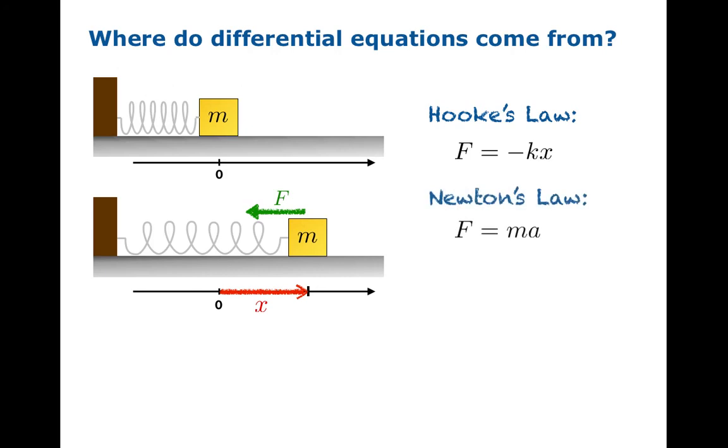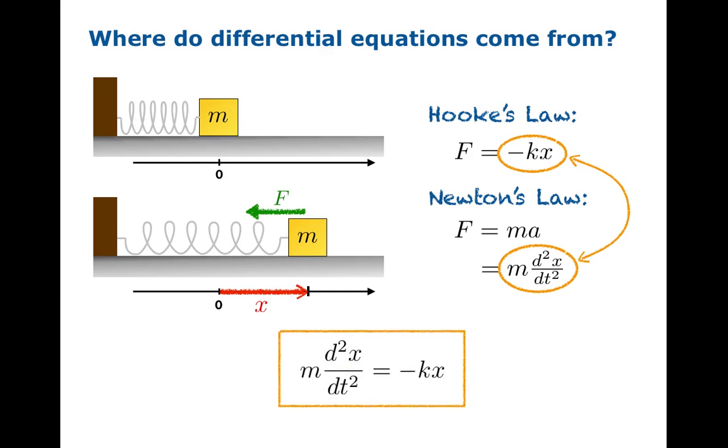Newton's law tells you that another way to write the force is mass times acceleration, but acceleration is just the second derivative of position with respect to time. So you have these two ways of writing out the force, and if you equate them, you obtain a second-order differential equation. Once again, however the spring behaves once you release it, you expect it to obey this differential equation.